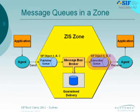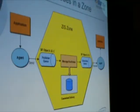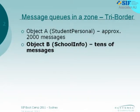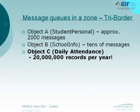Now let's go through the scenarios. I'll take a tribe order again because we had fun with him. Object A: student personal — a couple thousand, just fine. Object B: school info — tens, twenties, not a problem. Object C: daily attendance — 20 million records a year. Which, every day, is a few thousand records, that's okay, but when you do the initial sync it's going to work for a while.